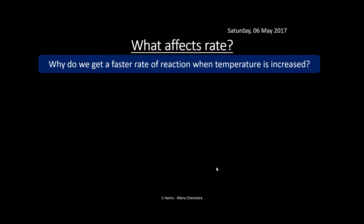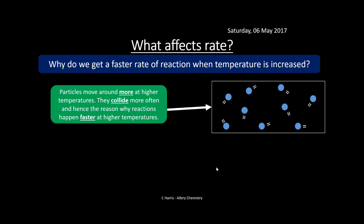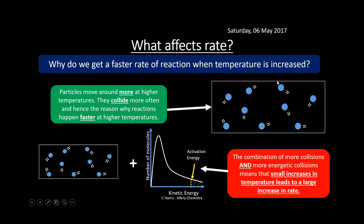Why do we get a faster rate of reaction when temperature increases? Thinking about collision theory: particles move around more at higher temperatures because they have more kinetic energy. This means they collide more often, hence reactions happen faster at higher temperatures. The combination of more frequent collisions and more energetic collisions means that a small increase in temperature leads to a large increase in rate. You must make sure you cover both: more frequent collisions and more energetic collisions — it's like a double effect.